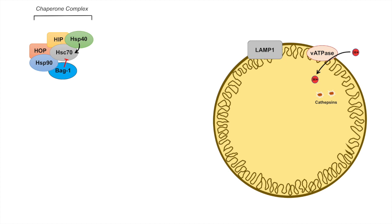LAMP1 is one of, if not the most abundant lysosomal membrane protein. Another very important lysosomal membrane protein involved in CMA is LAMP2A, or lysosomal associated membrane protein 2A. This protein is required for the translocation of CMA cargo into the lysosome. The last one to discuss in this lesson is LAMP2C, whose function we will cover in a moment.